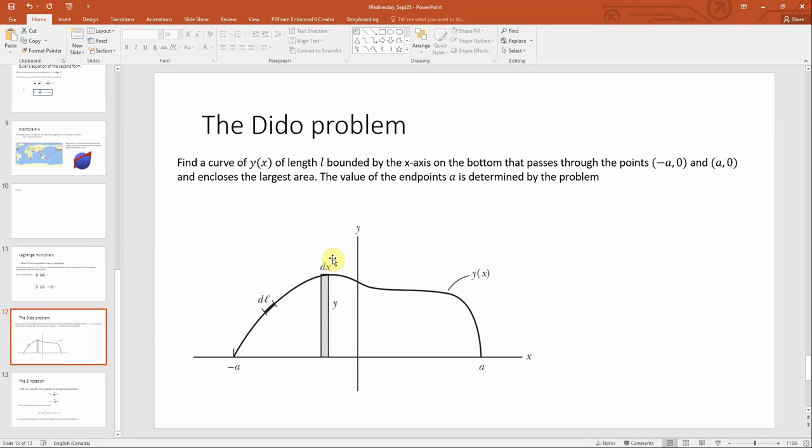We will use that to solve the Dido problem. This is a famous problem where a queen was exiled and was given a plot of land that could be covered by some cowhide. She cut this cowhide into very thin strips, tied these strips together, and put this out into a circle, creating a really large perimeter. We'll do a modification where we want to figure out the largest area from a line extending from minus a to a, bound to the bottom in a straight line, and determine what shape this takes to maximize this area.